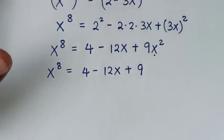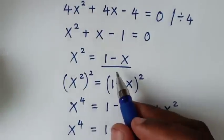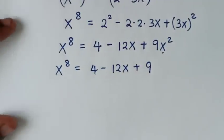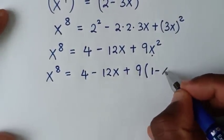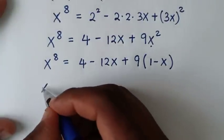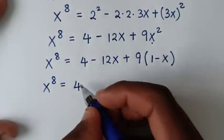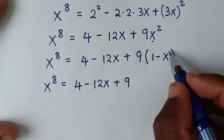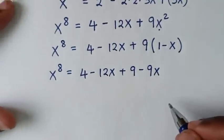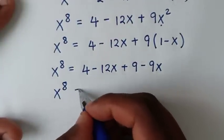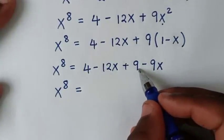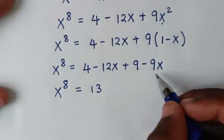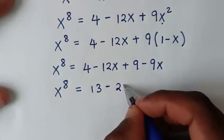Note that x² = 1 minus x, so we substitute that in for x² here. So 9x² becomes 9 times (1 minus x), giving 9 minus 9x. Therefore x⁸ = 4 minus 12x plus 9 minus 9x, which simplifies to x⁸ = 13 minus 21x.